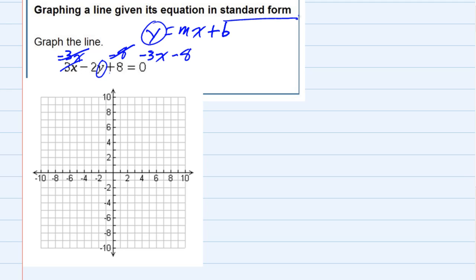This will move the 8 over. So now I'm left on the left with negative 2y, and on the right I now have negative 3x minus 8.